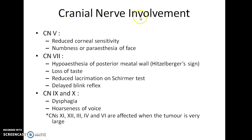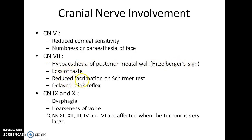Due to the involvement of the 5th cranial nerve, there will be reduced corneal sensitivity and numbness or paraesthesia of the face. Due to involvement of the 7th cranial nerve, there will be hypoesthesia of the posterior meatal wall, which is called Hitzelberger's sign, loss of taste, reduced lacrimation seen on Schirmer's test, and delayed blink reflex.